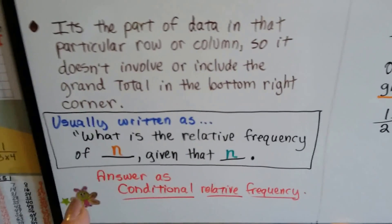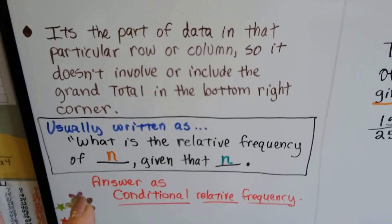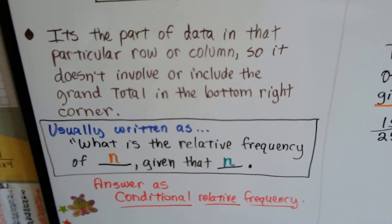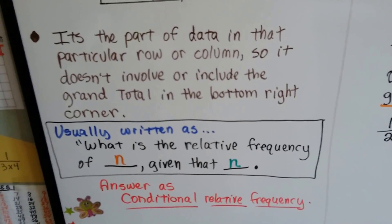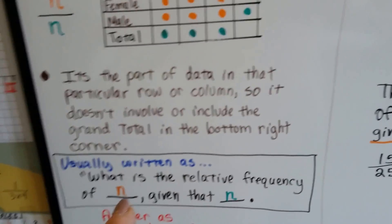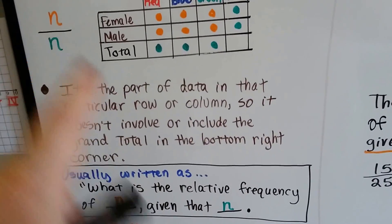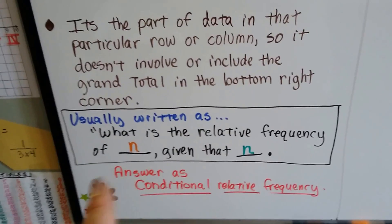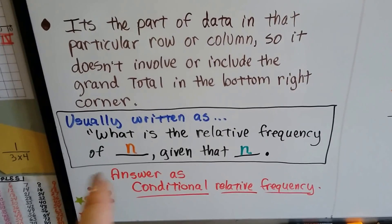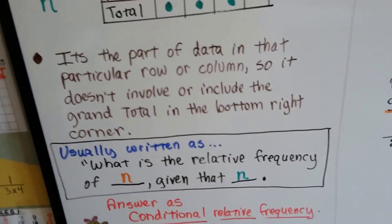And when we see it written in a book or in our work, it's usually written as, what is the relative frequency of blank given that blank? So, the orange one is the numerator here and the given is the denominator. So we would know that we could answer this by finding the conditional relative frequency.